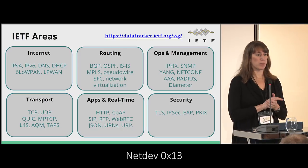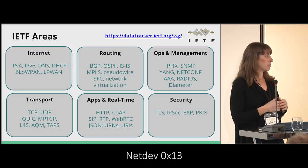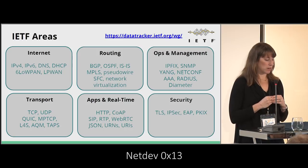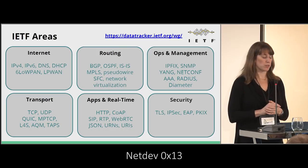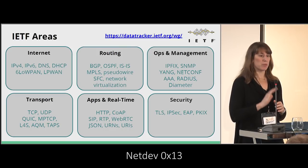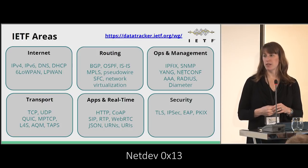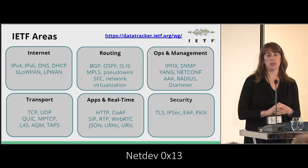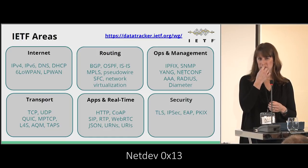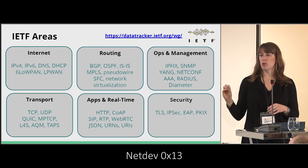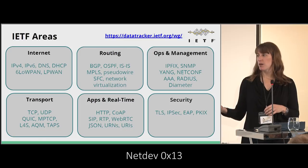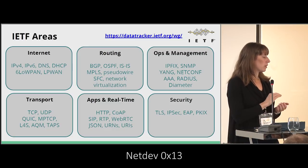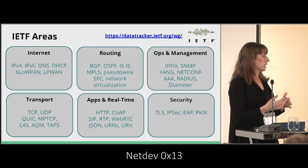Each of our working groups — we have about 120 of them — has a mailing list. Many are now using GitHub repositories for their collaborative work and process documents. Separate from this, some of you may be familiar with the IRTF, the Internet Research Task Force, our sister organization. The IRTF organizes research groups — about 15 or 20 of them — focused more on research and experimental protocol development. Some of the work you may have heard about this week will happen in the IRTF research groups, and they meet at the same time during IETF meetings.